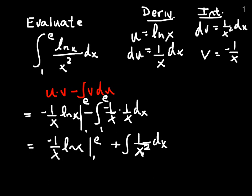So we end up with negative 1 over x, the natural log of x, and then negative 1 over x, and this entire thing is evaluated from 1 to e.